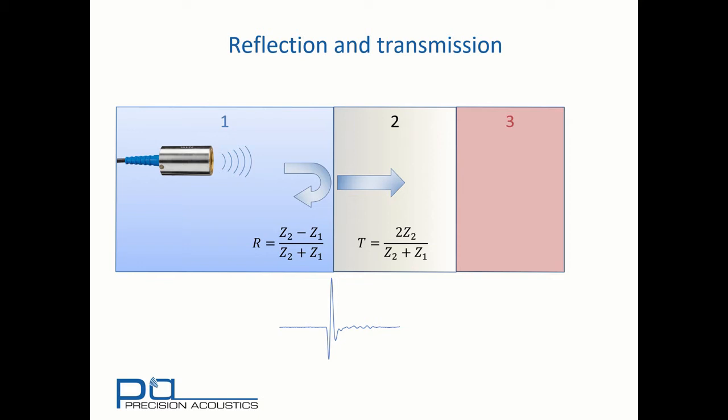That transmitted wave will then propagate towards the interface between media two and three, where again there will be some partial reflection and some transmission. And finally, when the wave encounters the rear surface of medium three, it will also reflect.